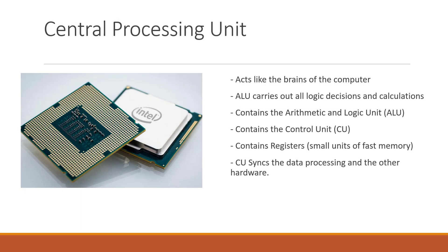Our next internal component is the central processing unit, which is often abbreviated to the letters CPU. This acts like the brains of the computer. It is made up of three parts: the arithmetic and logic unit, which performs all the calculations and makes the logical decisions; the control unit, which coordinates the movement of data around the CPU and to the other components in the computer; and registers, which are small amounts of super-fast memory built directly into the processor to store data as it is being processed.